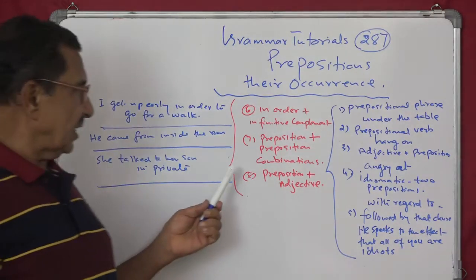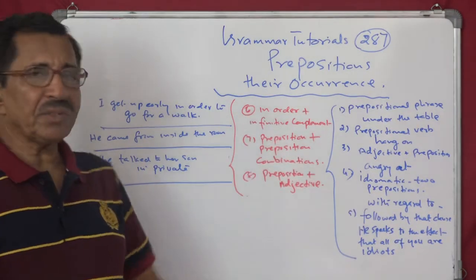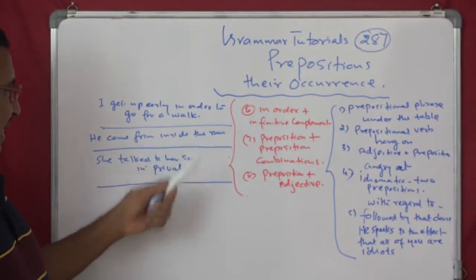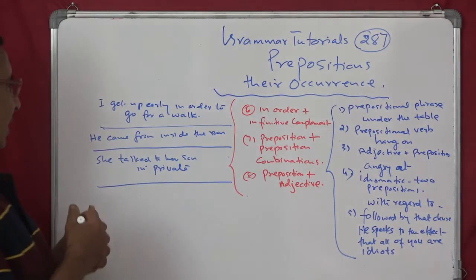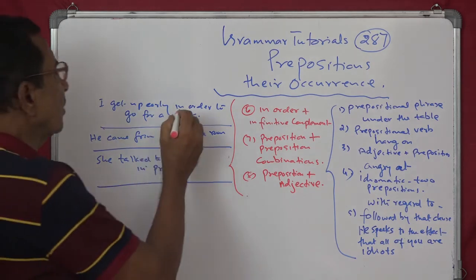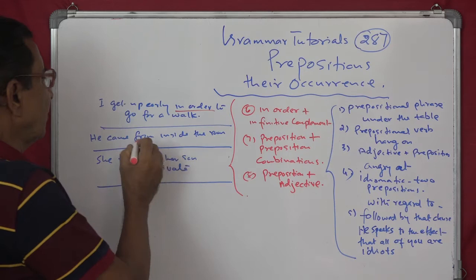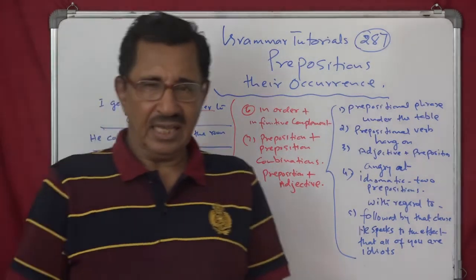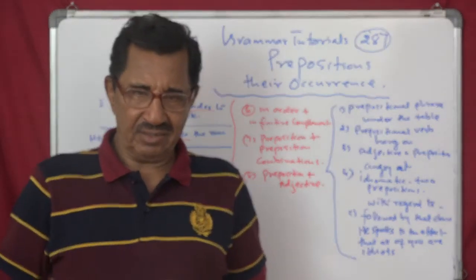And then second, seventh is preposition with preposition. For example here, he came from inside the room. See, preposition. Here it is in order to, in order. Then we have got from inside. Two prepositions. Prepositions with preposition. He came from inside.